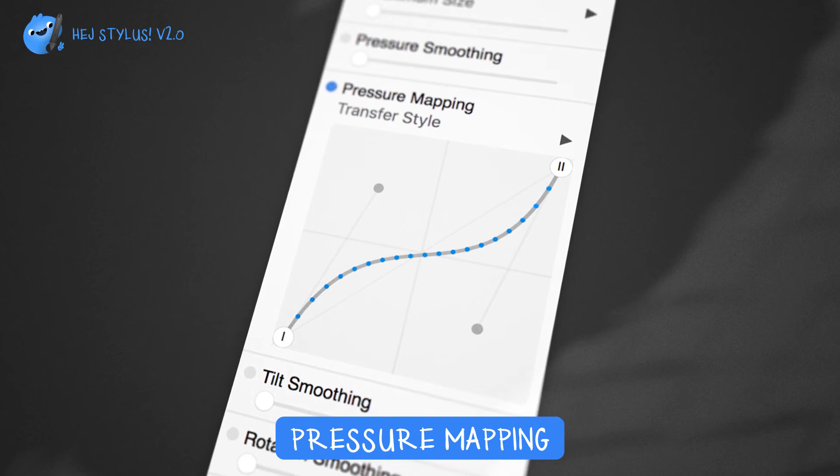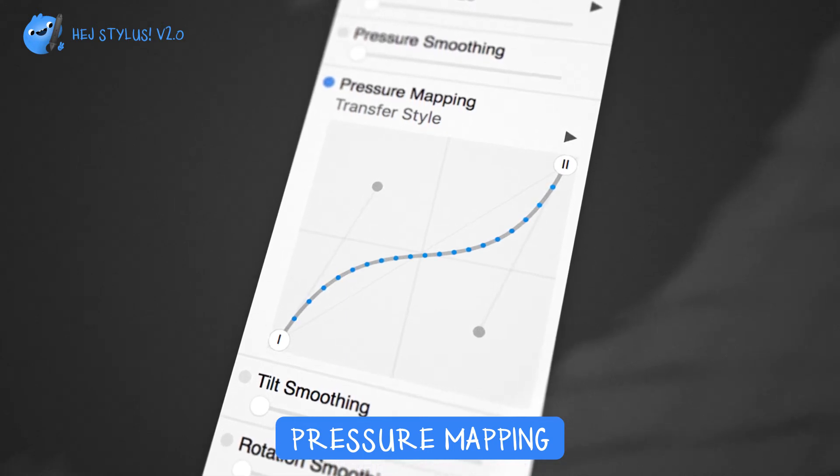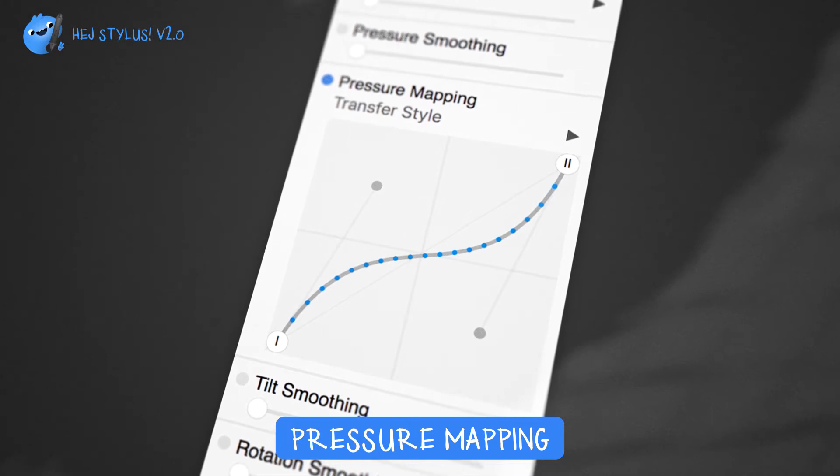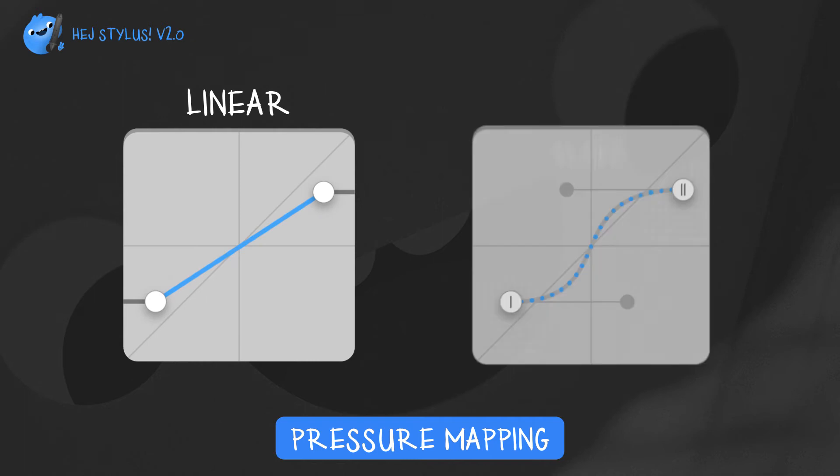Let's have a look at pressure mapping. Pressure mapping defines how the pressure applied on your tablet is transferred onto the canvas of your drawing application. It has two transfer styles: linear and Bézier.